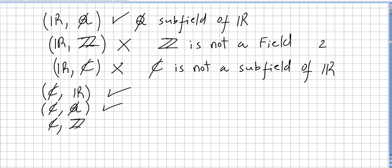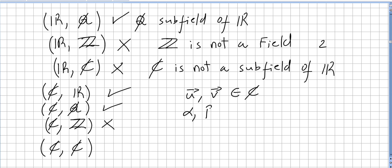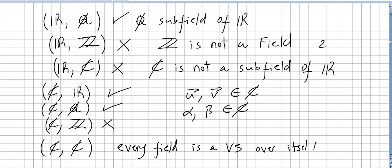What about ℂ over ℤ? The integers are not a field, so this is not a vector space. What about ℂ over ℂ — taking vectors and scalars both from the complex numbers? Yes, this is a vector space, because every field is a vector space over itself.